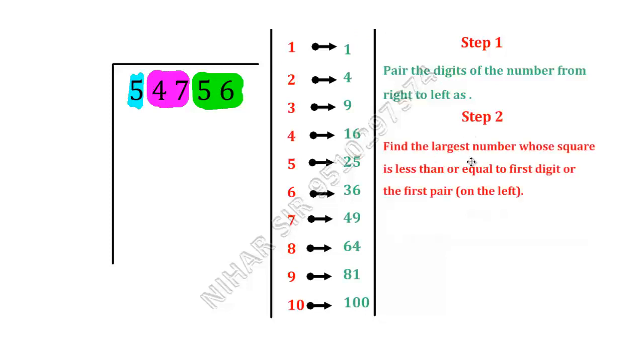Now step 2. Find the largest number whose square is less than or equal to first digit or the first pair. Here we have first digit. If I would have 6 digits then it might be pair but here it's a number. So we have to find square of a number which is lesser than 5 or equal to 5. For this you must know all the squares from 1 to 10. So here you can see 2 square is 4. 3 will be greater than 5. So 2 square is 4.